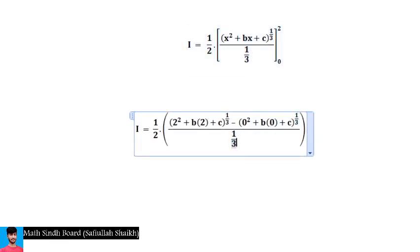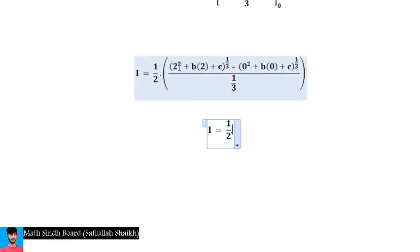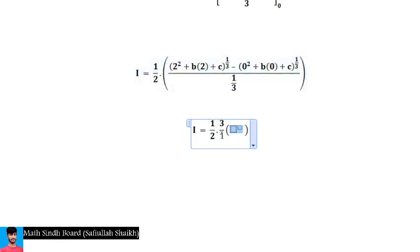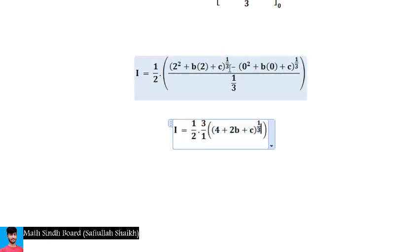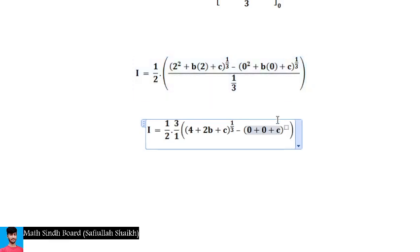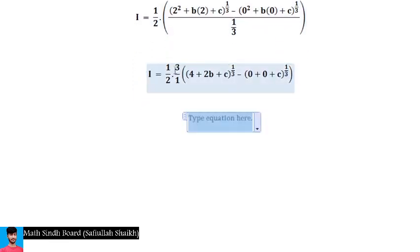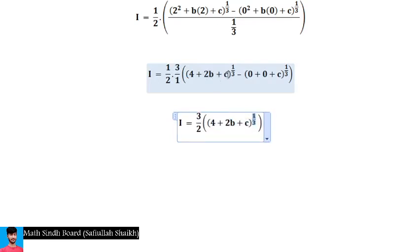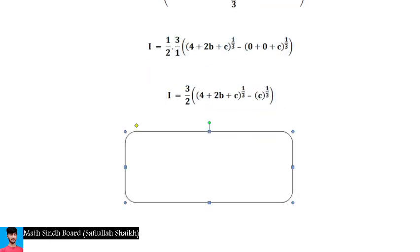Simplifying the final result: 1 divided by (1/3) equals 3, so we have (1/2)·3·[(4 + 2b + c)^(1/3) − c^(1/3)], which gives (3/2)·[(4 + 2b + c)^(1/3) − c^(1/3)] as the final answer.